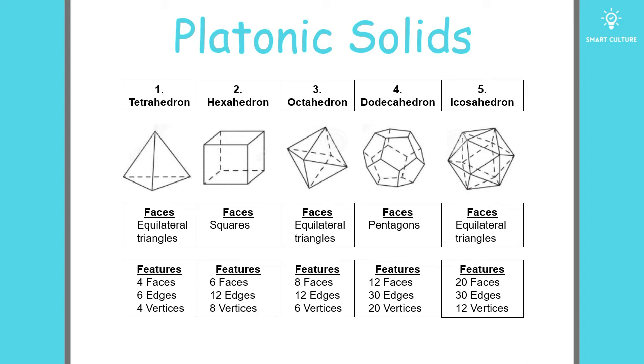Now let's look at the octahedron. You'll see that the faces are all equilateral triangles. An octahedron has eight faces, 12 edges, and six vertices. The faces of the dodecahedron are all pentagons. And the dodecahedron has 12 faces, 30 edges, and 20 vertices.